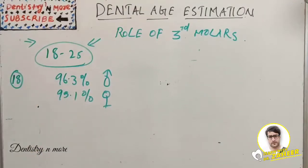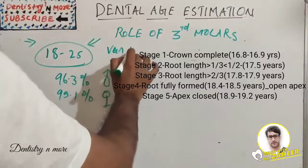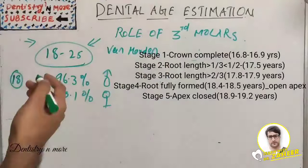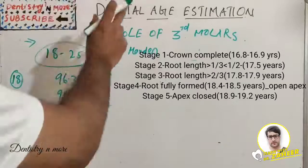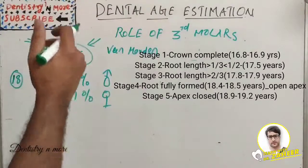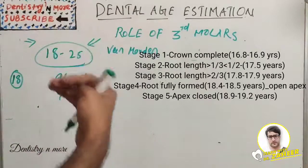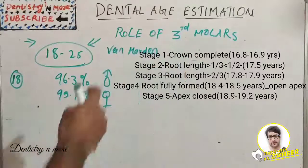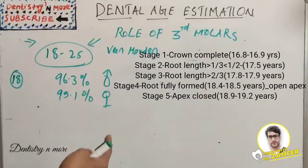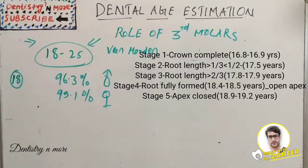Van Harden developed a five-stage system measuring the mesial root of developing mandibular third molar to determine dental age. Stage 1: crown is complete, person is 16.8 to 16.9 years. Stage 2: root length is greater than one-third and less than one-half, person will be 17.5 years. Stage 3: root length is greater than two-thirds, person's age is between 17.8 to 17.9 years.